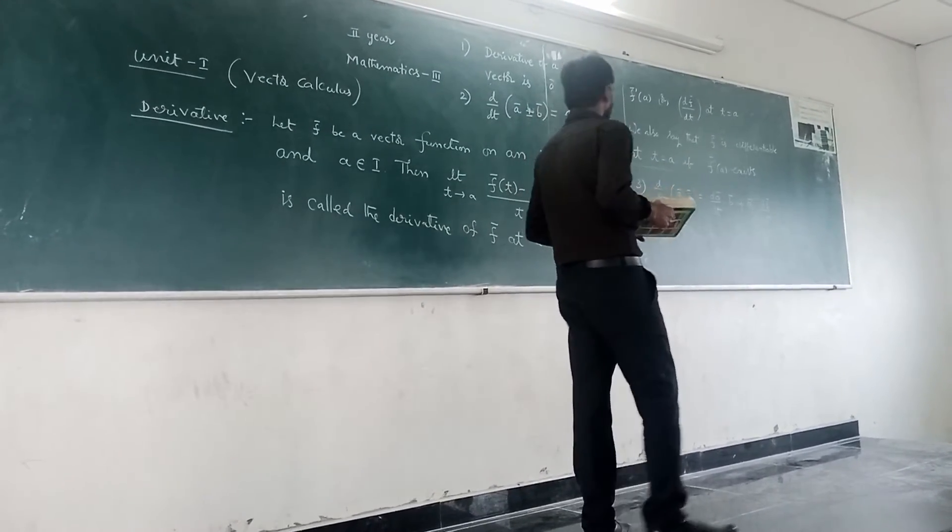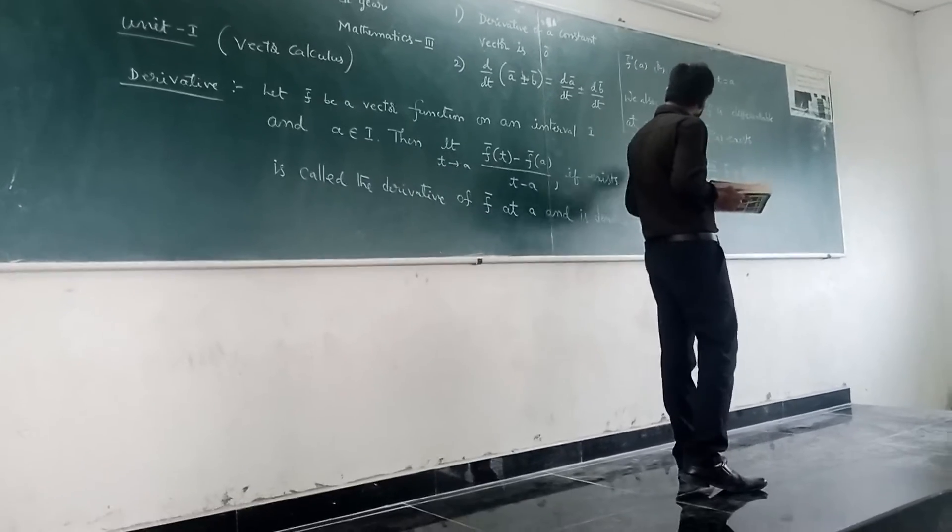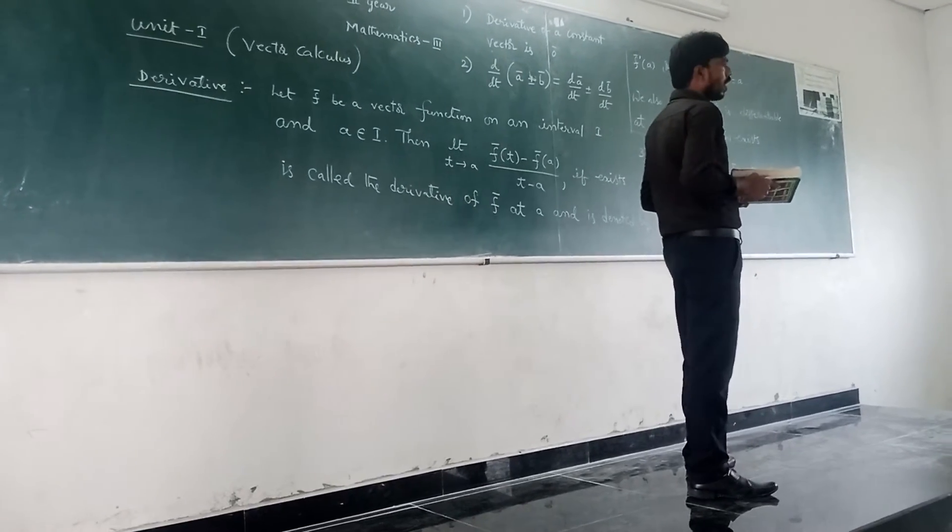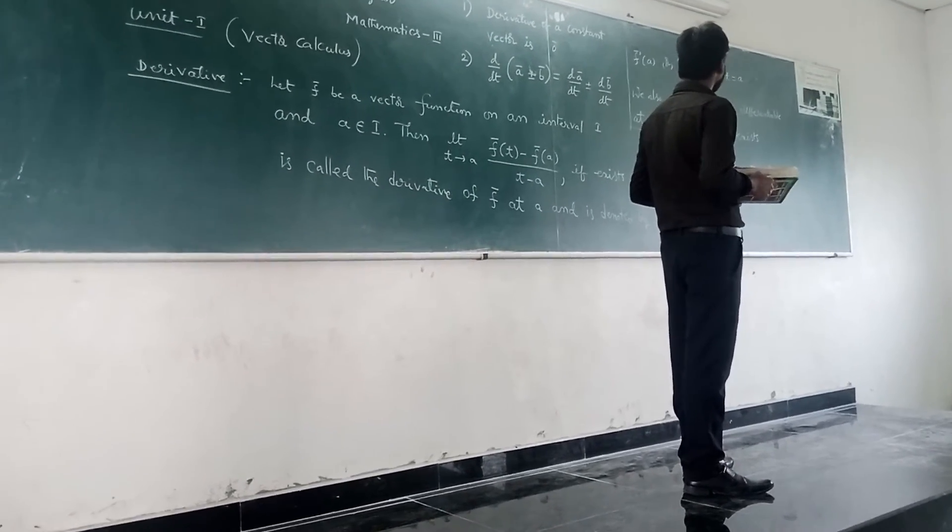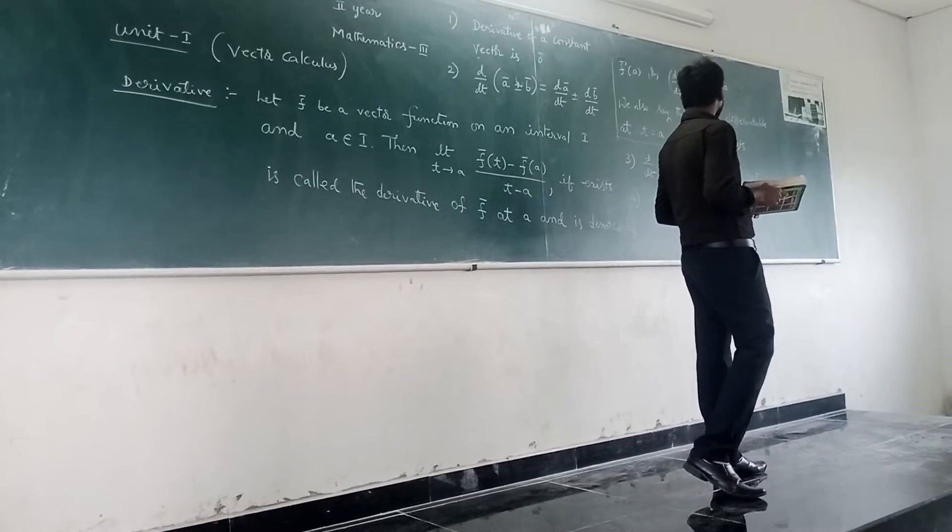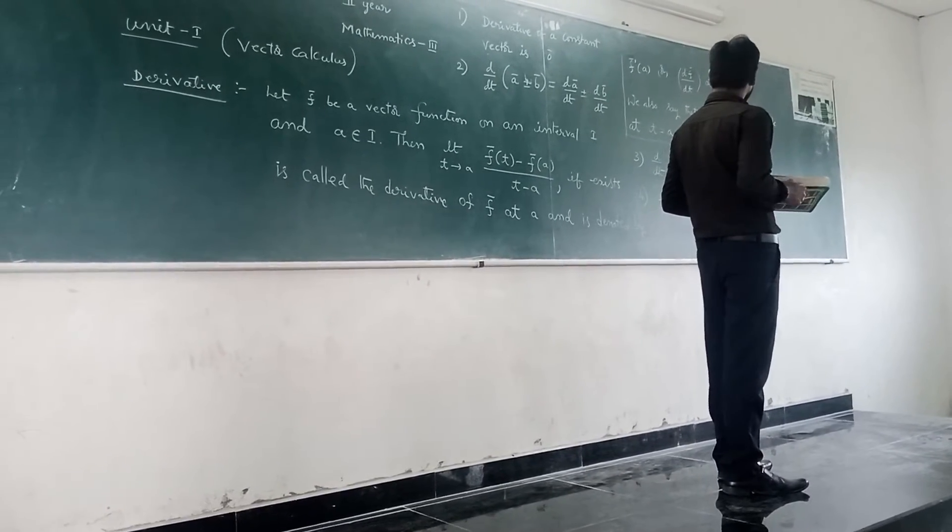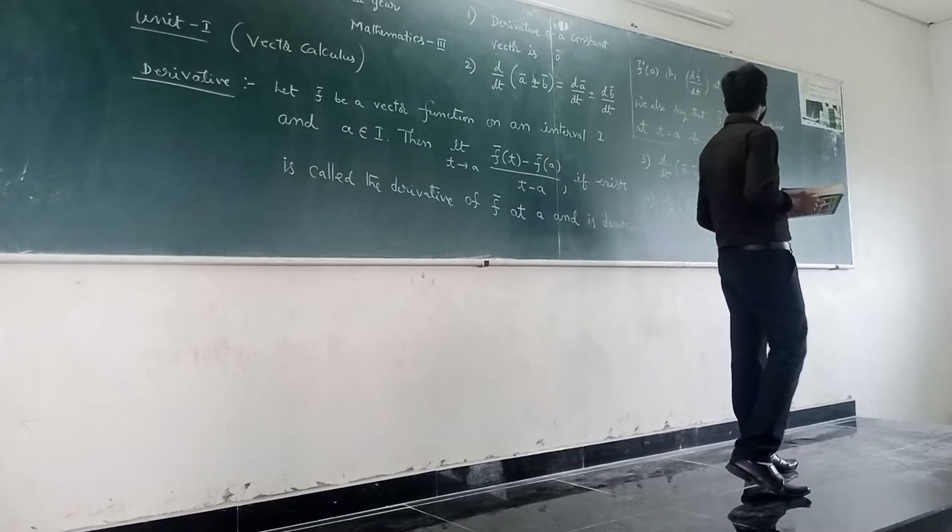Third one, derivative of a bar dot b bar equals derivative of a bar with respect to t dot b bar, plus a bar dot derivative of b bar with respect to t.